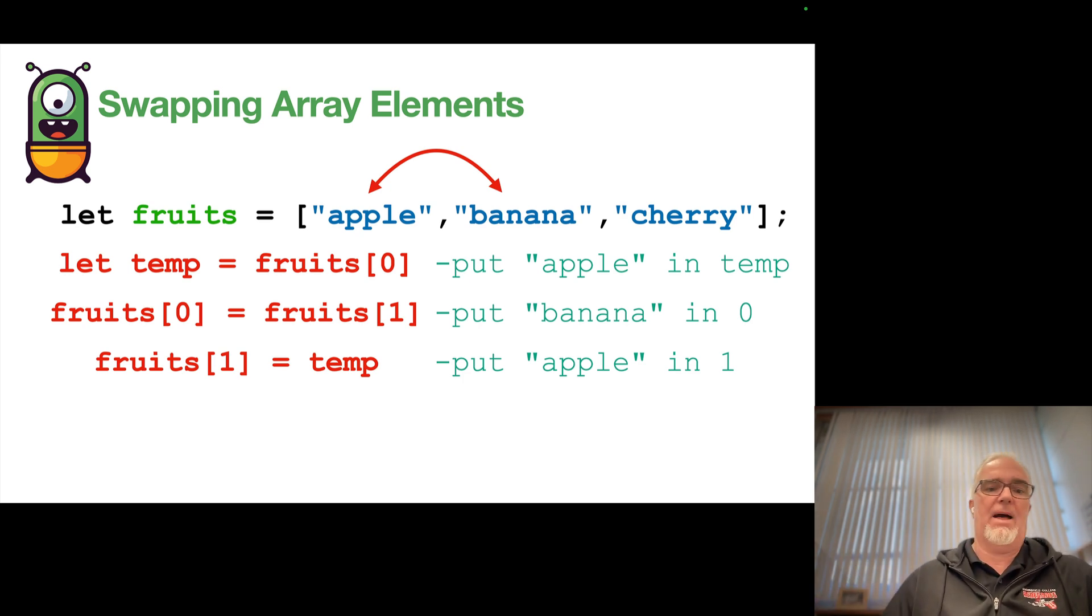And now I'm taking the apple out of the temporary variable and putting it into one. So you have to have that temporary variable as a very short term holding spot for the element that you want to swap.